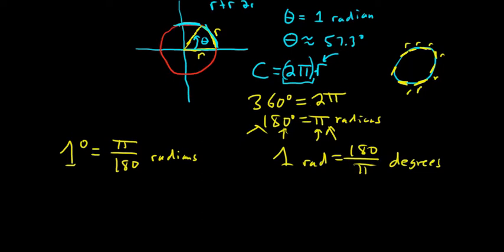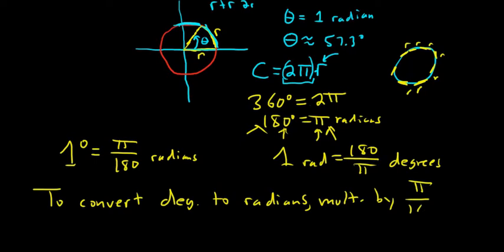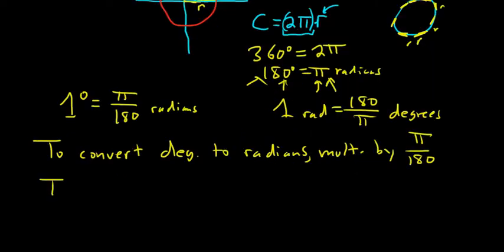So, in general, to convert, and we're going to practice this, that's what this video is about, to convert degrees to radians, what you want to do is multiply by π over 180. And then to convert radians to degrees, you want to multiply by 180 over π.